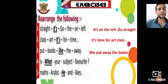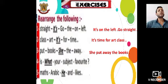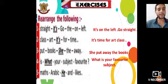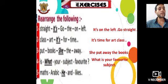Question number four: what, your, subject, favorite. I start with 'what.' The answer is: what's your favorite subject? Question number five: math, Arabic, he, likes. He likes math and Arabic — or he likes Arabic and math.